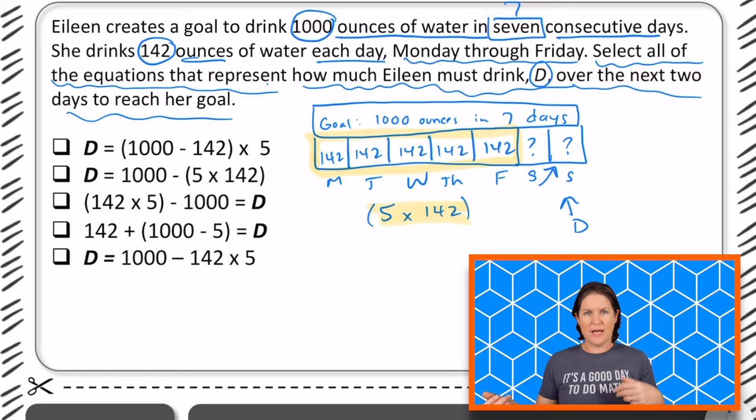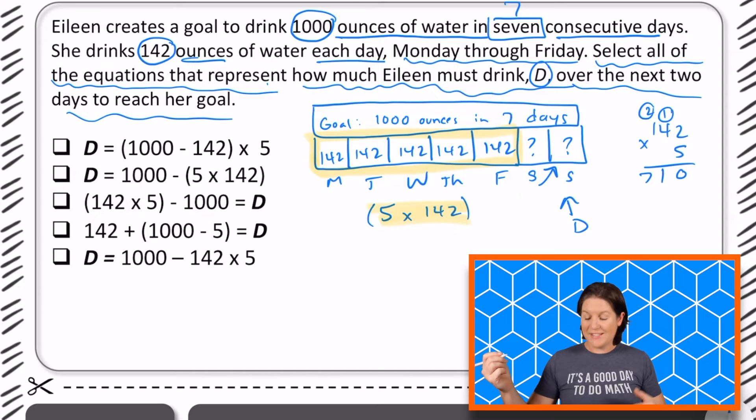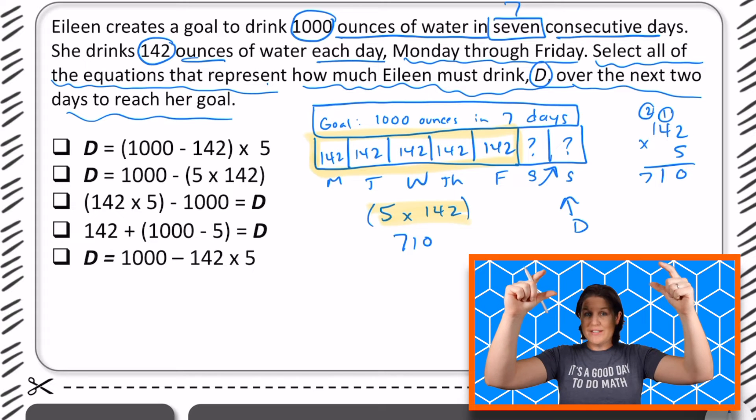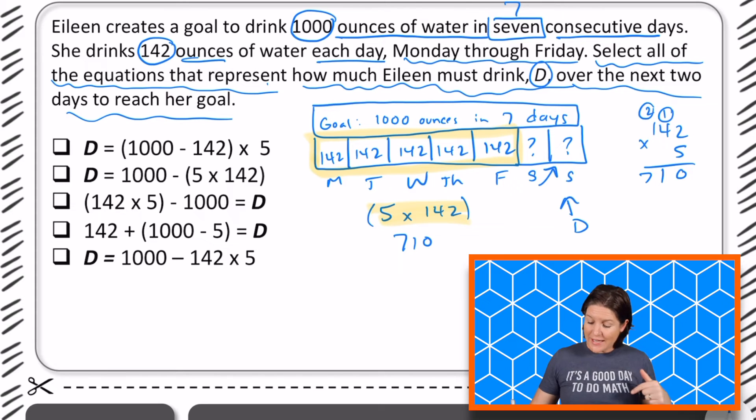And then we could figure out how much she still needs to drink D. So first we would need to multiply five times 142. I'm going to go ahead and do that over here just to know. So that would be 710 ounces that she's had so far. So her goal is to get to 1000, we could take away 710 and then figure out how much she is drinking. So let's see what answer choices play out there.